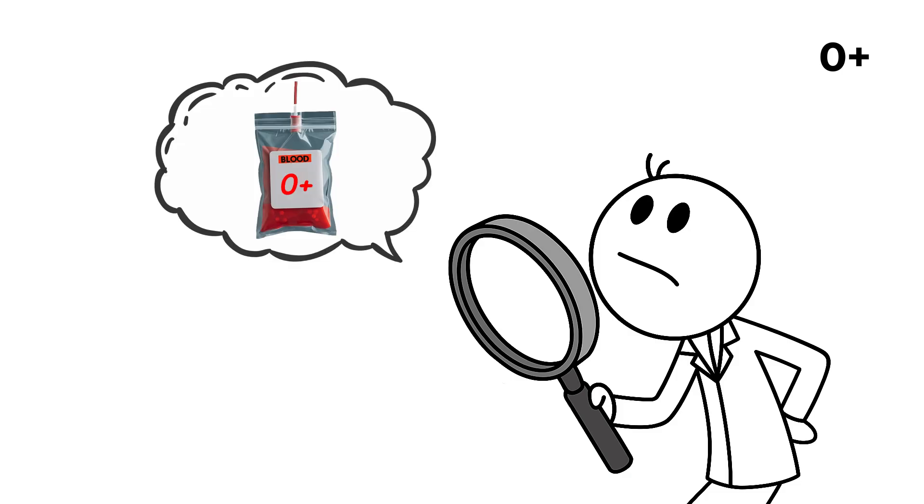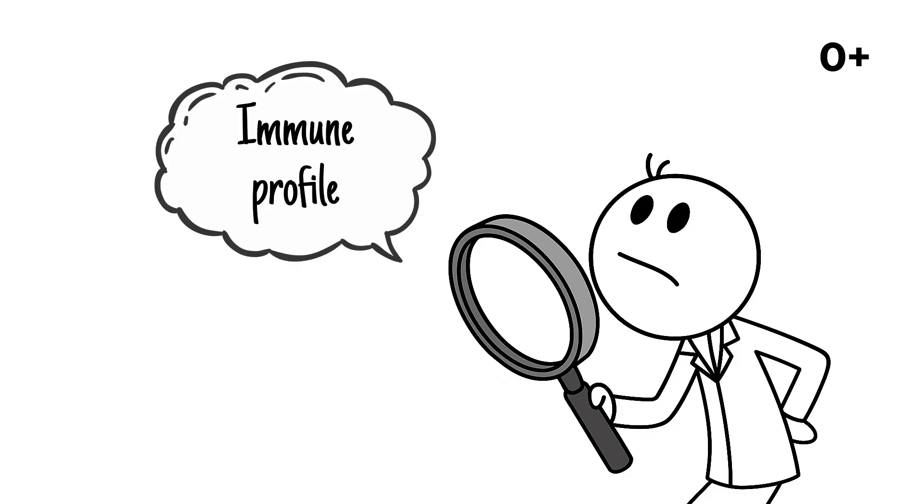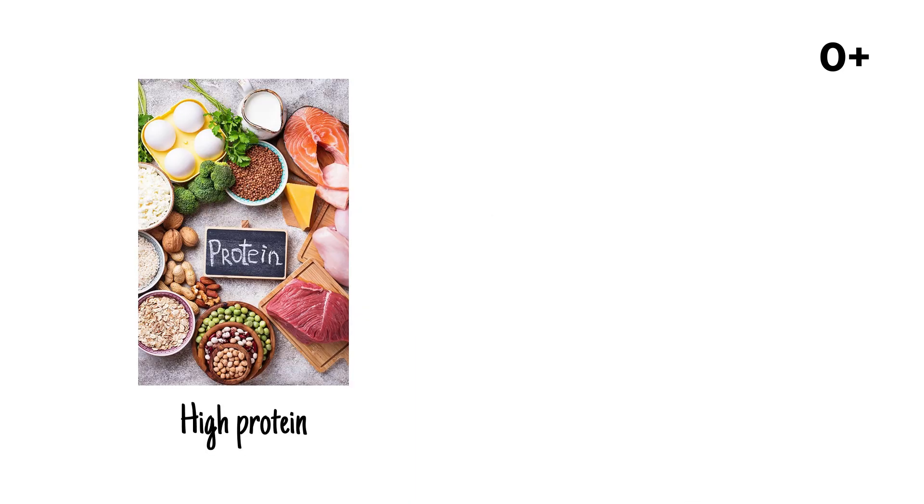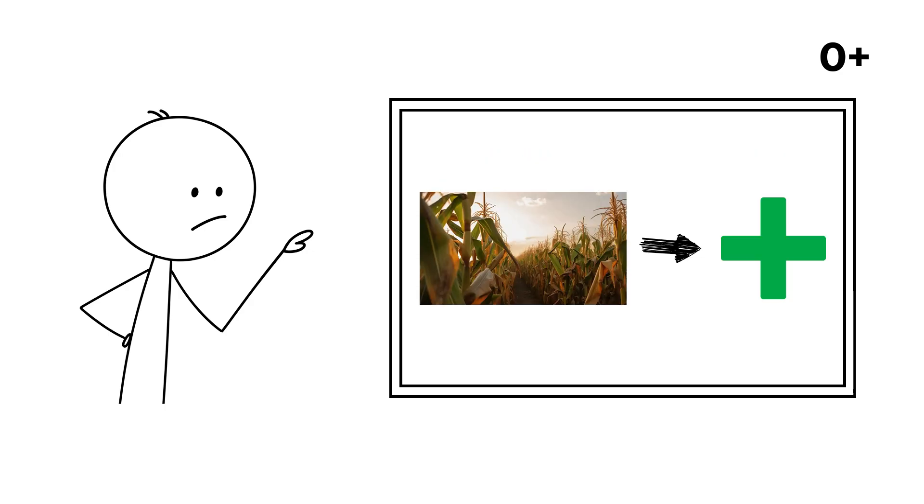Anthropologists also propose that type O was advantageous for hunter-gatherers, as their immune profiles and digestive systems adapted to high-protein diets and exposure to wild pathogens long before agriculture reshaped human health.